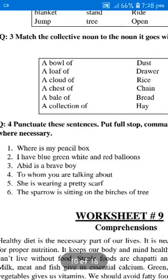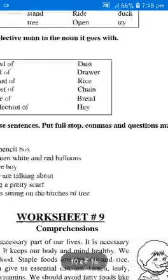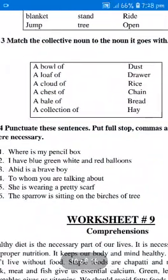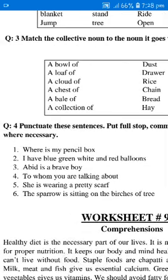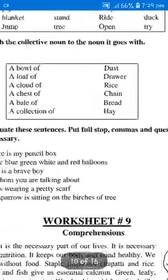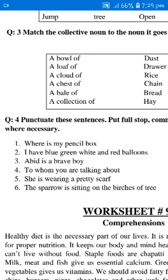Question number 4: Punctuate these sentences. Put full stop, commas, and question mark. Every sentence ends with a full stop. A comma tells us to pause. Commas are used to separate things in a list — like number 2: I have blue, green, white and red balloons. Here you can put a comma after blue and green. A question begins with a capital letter and ends with a question mark. So you can punctuate these sentences.